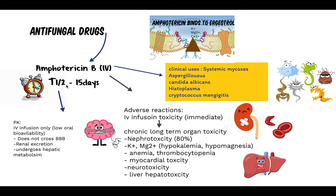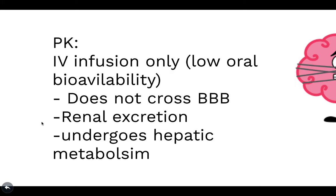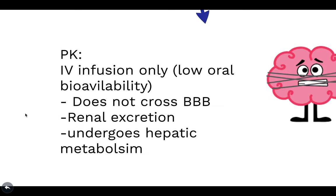Amphotericin B has a plasma half-life of 15 days. The pharmacokinetics include IV infusion only due to low oral bioavailability. It does not cross the blood-brain barrier, undergoes renal excretion, and also undergoes very slow hepatic metabolism.